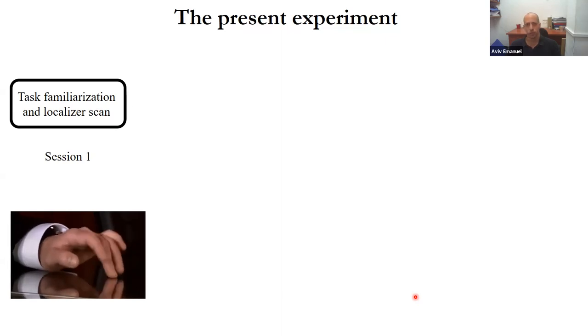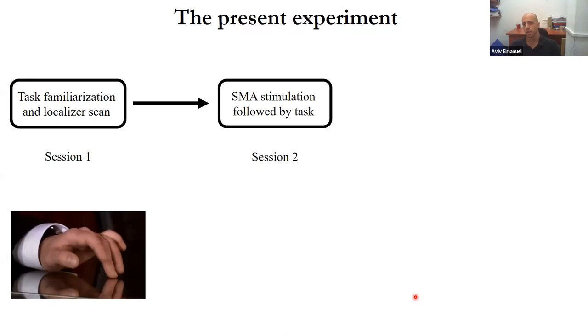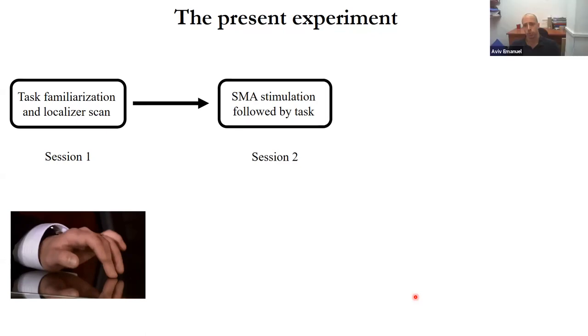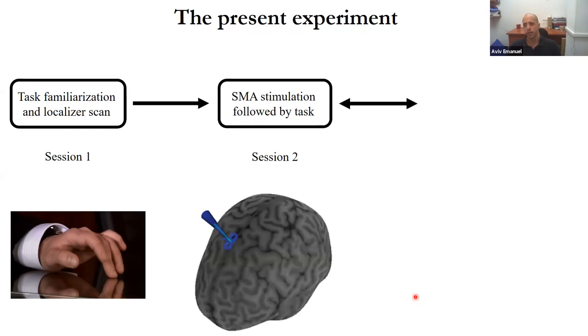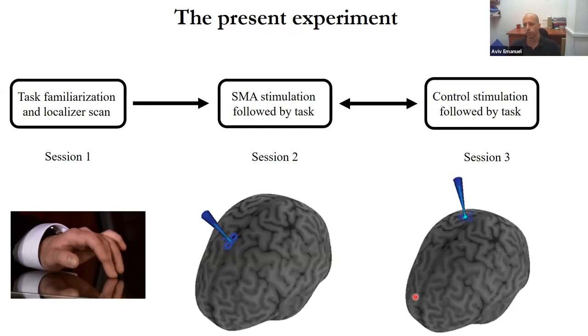We thought that if we could inhibit the SMA, we might somehow alter the change in effort cost over time — which is reference dependent — and therefore cause a change in how efforts are allocated over time. We took participants to three sessions. On the first session, we had a task familiarization — a 10-minute block — and a localizer scan involving finger tapping. On the next session, we had SMA stimulation with inhibitory rTMS at 120% of resting motor threshold, lasting 15 minutes and followed by the task. And then we had control stimulation to the precuneus, also followed by the task.